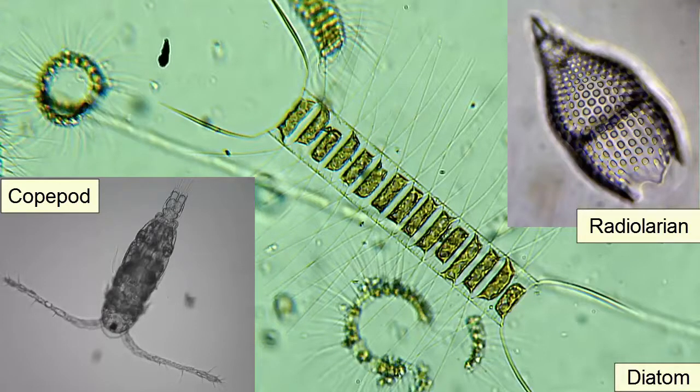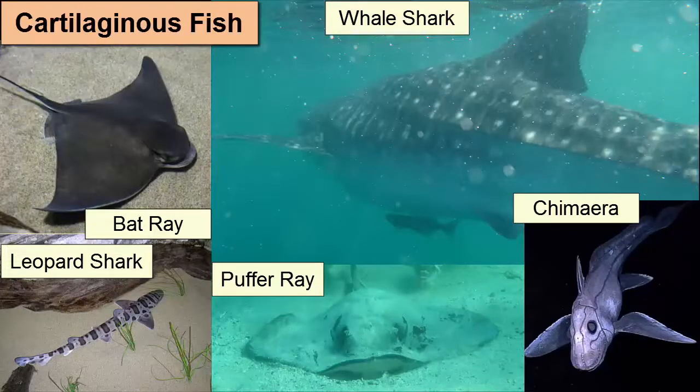There are several methods that nekton and plankton use to keep themselves afloat. Cartilaginous fish reduce their density with oil-rich, low-density organs and low-density cartilaginous skeletons.